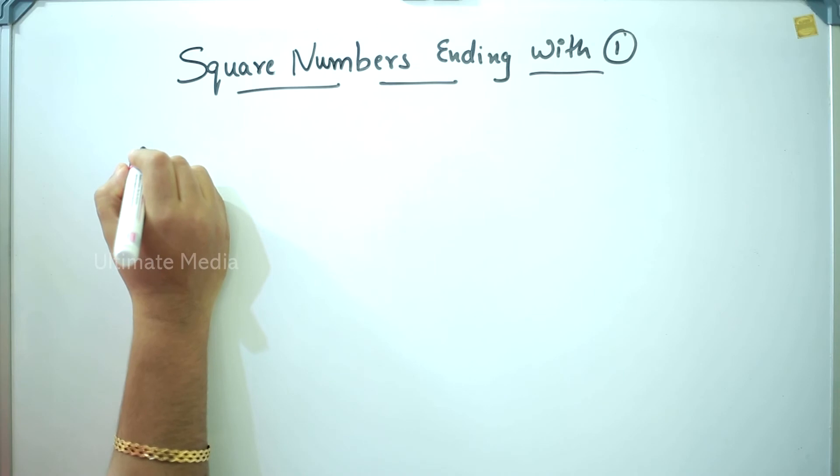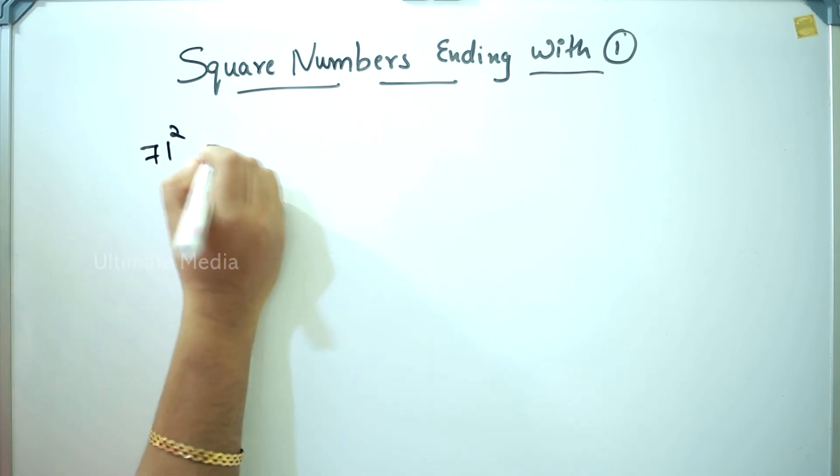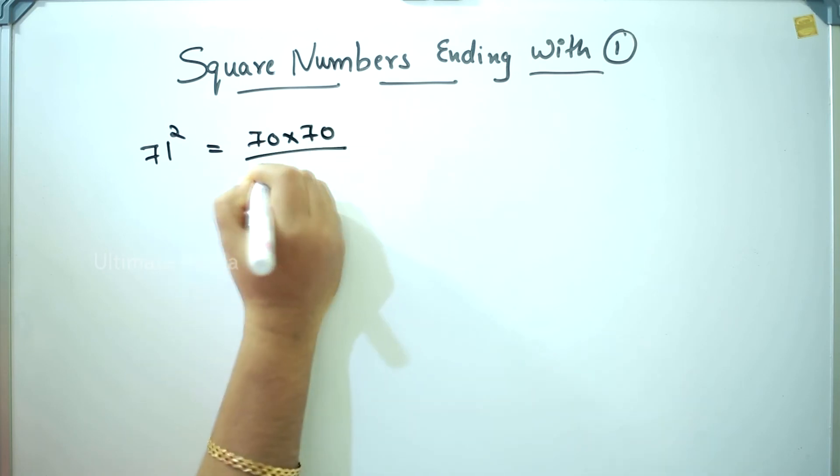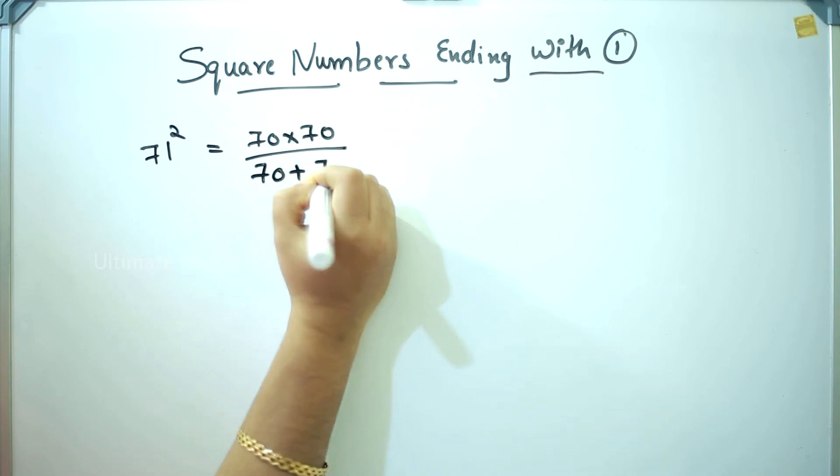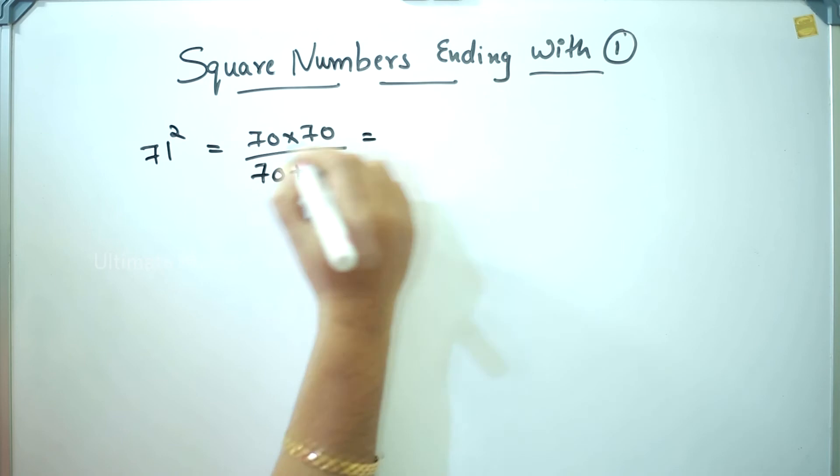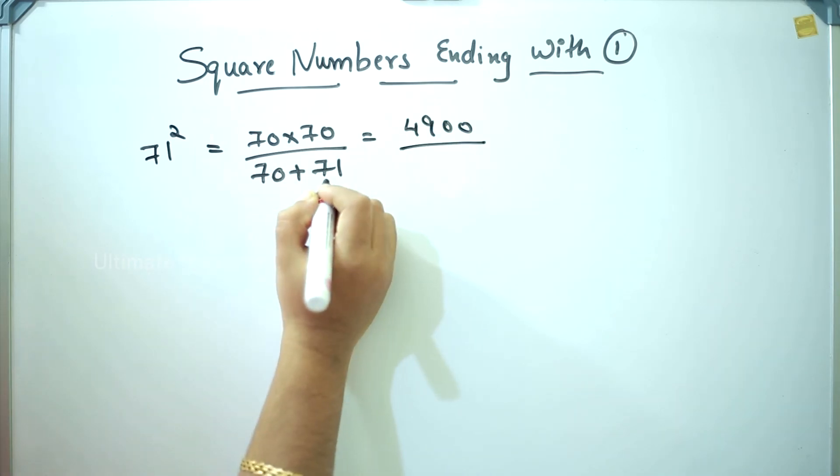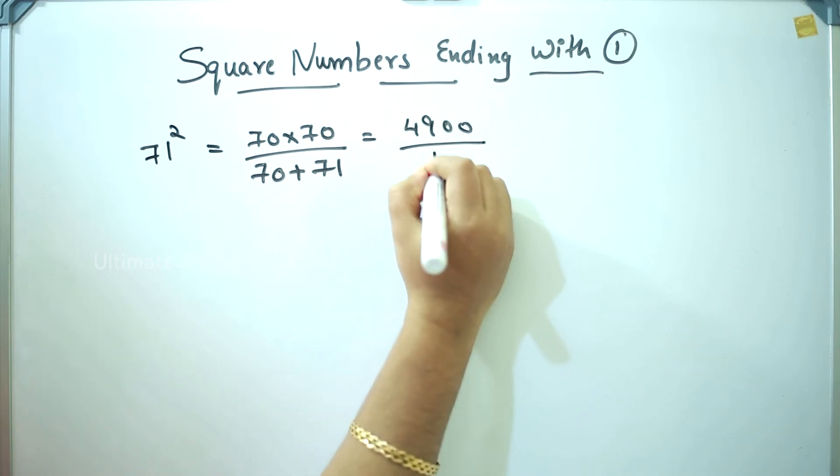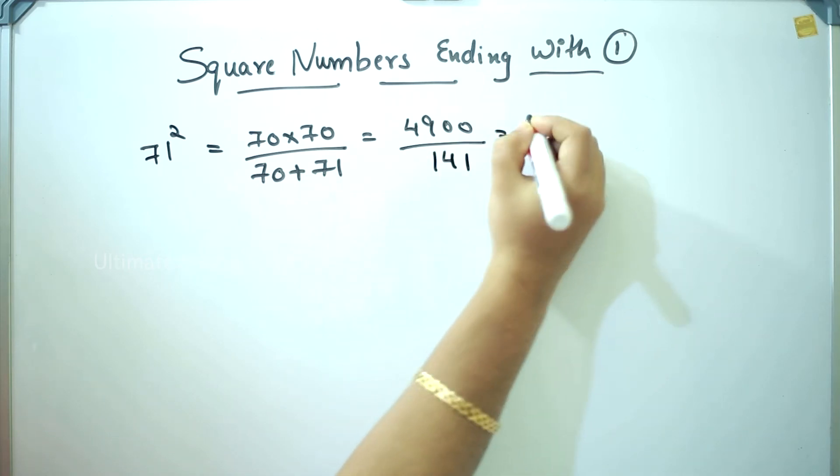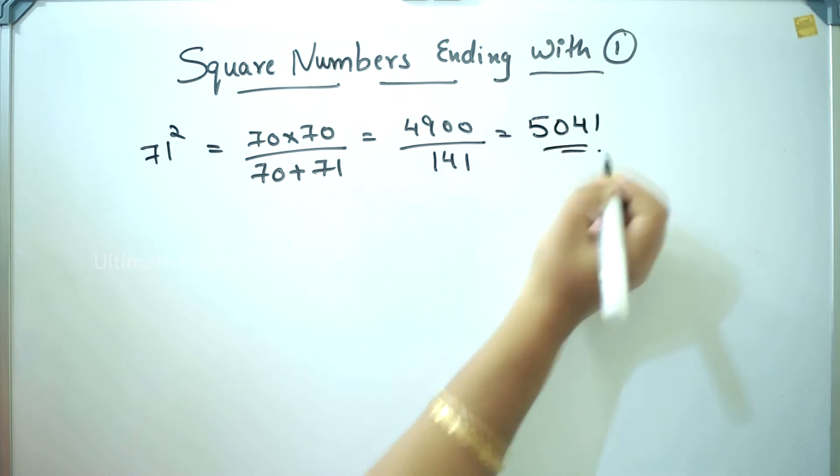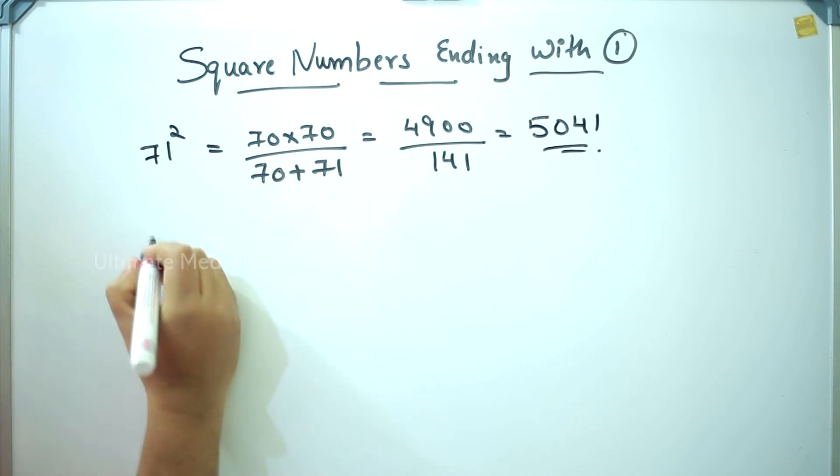Next, 71 square: 70 into 70 divided by 70 plus 71. 7 into 7 is 49, double zero, divided by 141. Answer is 5041.